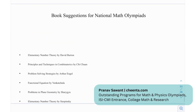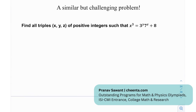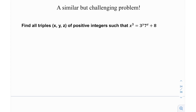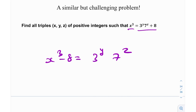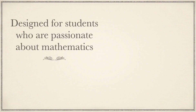For book suggestions for national math olympiads: Elementary Number Theory by David Burton, Principles and Techniques in Combinatorics, Problems and Strategies by Arthur Engel, Functional Equations by Venkatachala, Problems in Plane Geometry by Sharygin, and Elementary Number Theory by Sierpinski. For a similarly challenging problem: find all triples (x, y, z) of positive integers such that x³ = 3^y · 7^z + 8. The ideas are similar — 3 and 7 are primes, so factorize x³ − 8 and use the GCD approach.